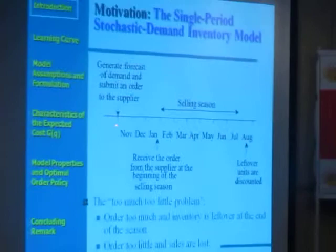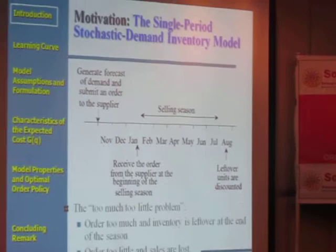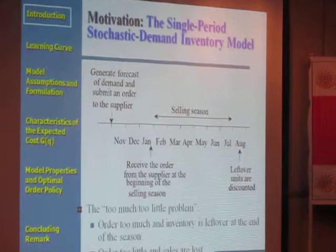At the end of the selling season, if they order too much, there will be leftover units. They have to mark the leftover units down or dispose of them at cost. That is the consequence of ordering too much — there will be leftover units that need to be discounted.